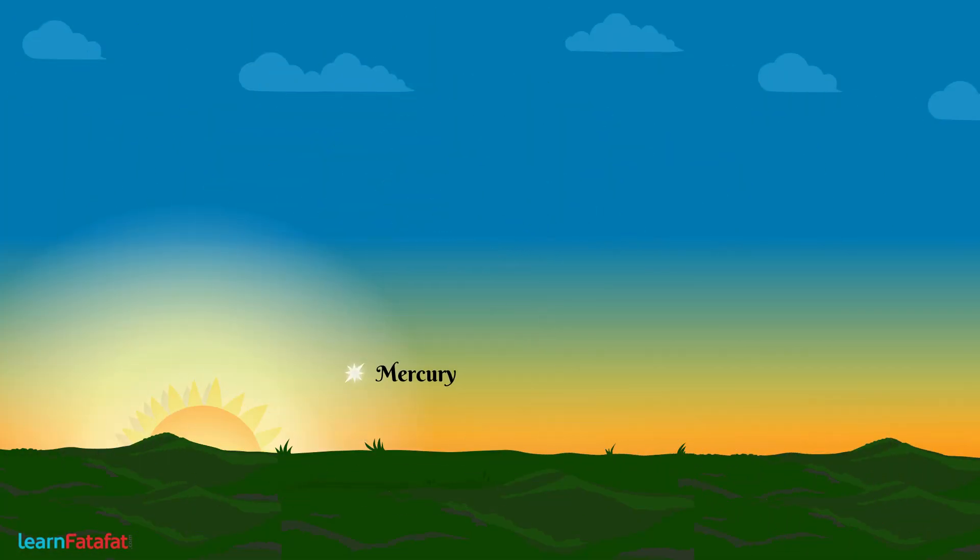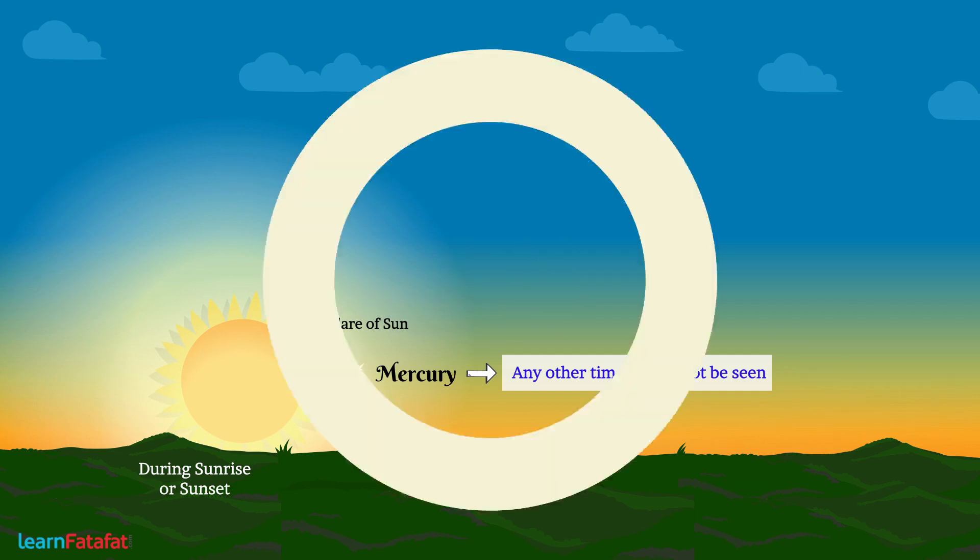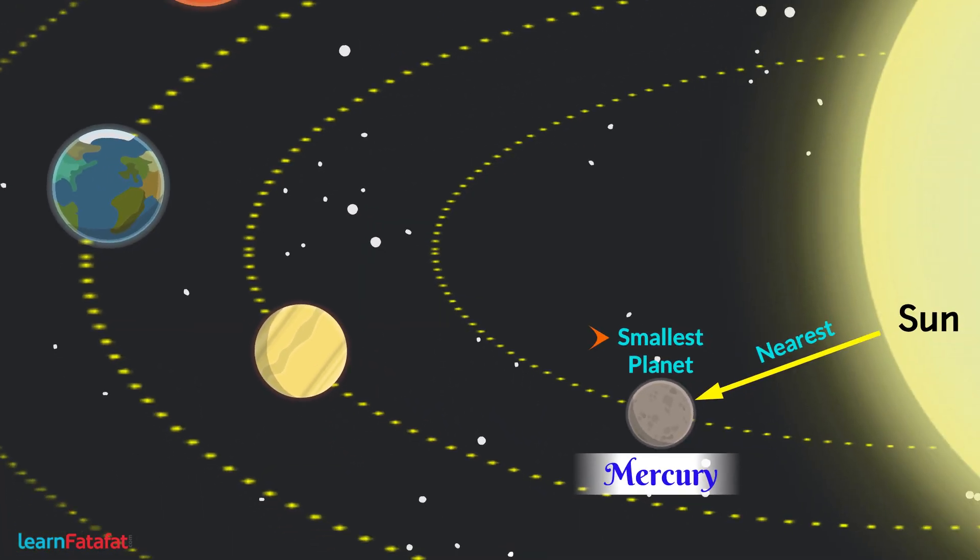Mercury can be observed only during sunrise or sunset near the horizon because at any other times it cannot be seen due to the glare of the sun. Mercury does not have a satellite of its own.